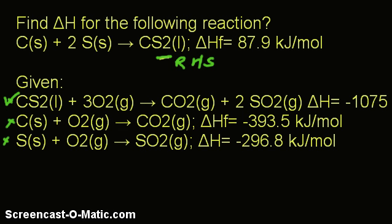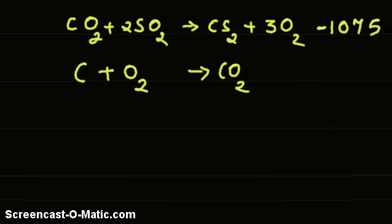Now, let us see another element — carbon. As you see, carbon is on the left-hand side of the target equation, and we need it on the left-hand side. Going to the second equation, you see carbon is there on the left-hand side. So, we will just add that equation as it is. Its enthalpy change we write as it is because we haven't changed anything, and that is −393.5.